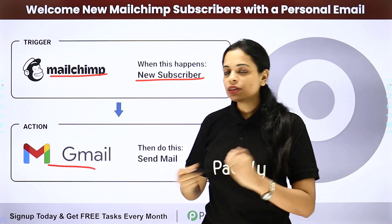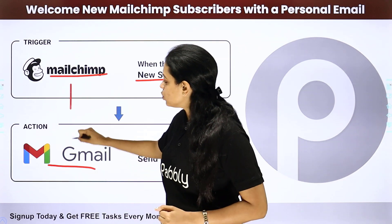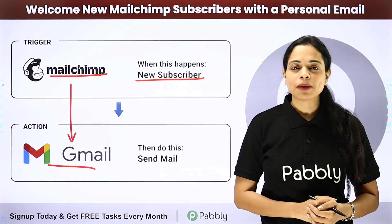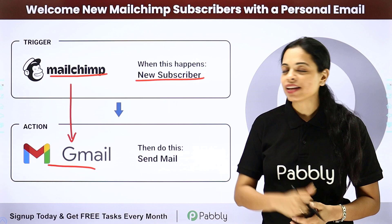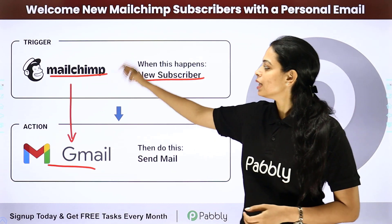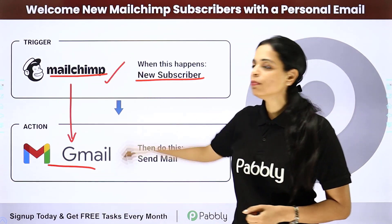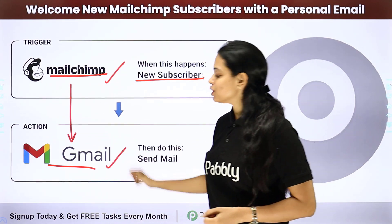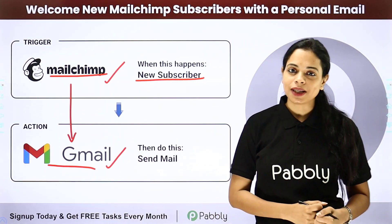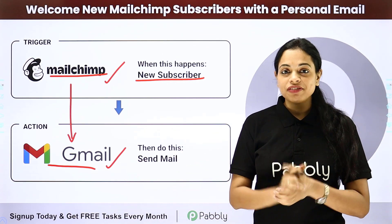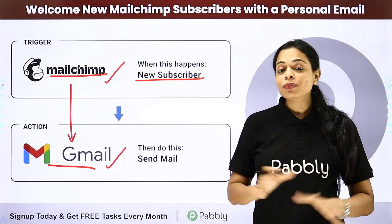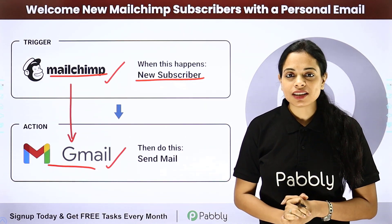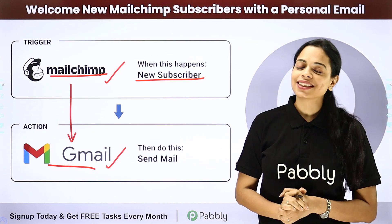To do this, we will have to integrate the two applications, and the same thing can be done using Pably Connect software. Here, your trigger application will be MailChimp and your action application will be Gmail. To understand how you can integrate and automate this entire process yourself, let me take you to my screen.